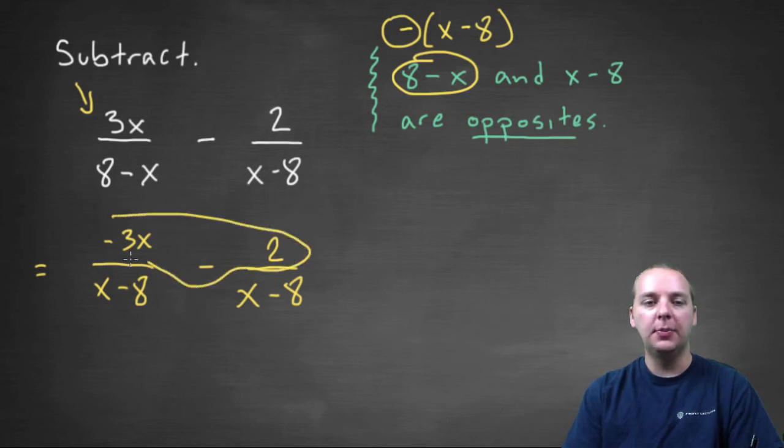so the arithmetic is simply going to happen in the numerator. And so our final answer would be -3x - 2, divided by x-8.